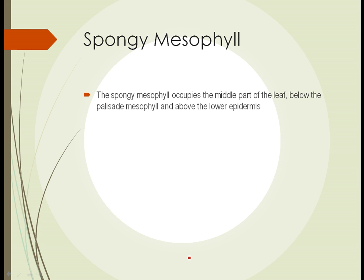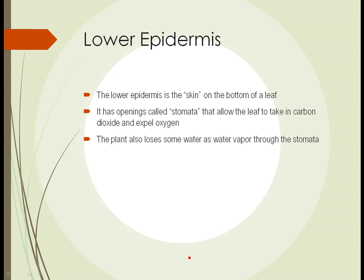The spongy mesophyll is below the palisade mesophyll and is a jumble of cells without particular orientation. It's above the lower epidermis and is a place where sap will pass through, where materials will pass through, where certain materials are stored, and it helps give the leaf some structure. The lower epidermis is the bottom skin of a leaf — the part that has openings allowing the leaf to take in air, carbon dioxide, and expel oxygen.